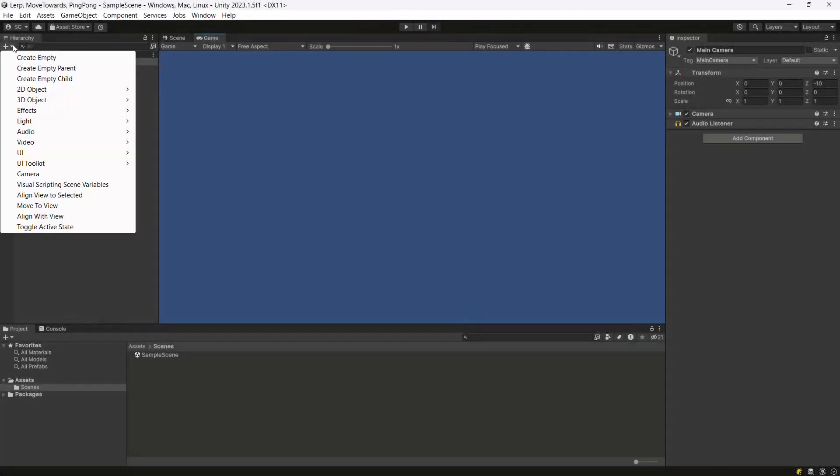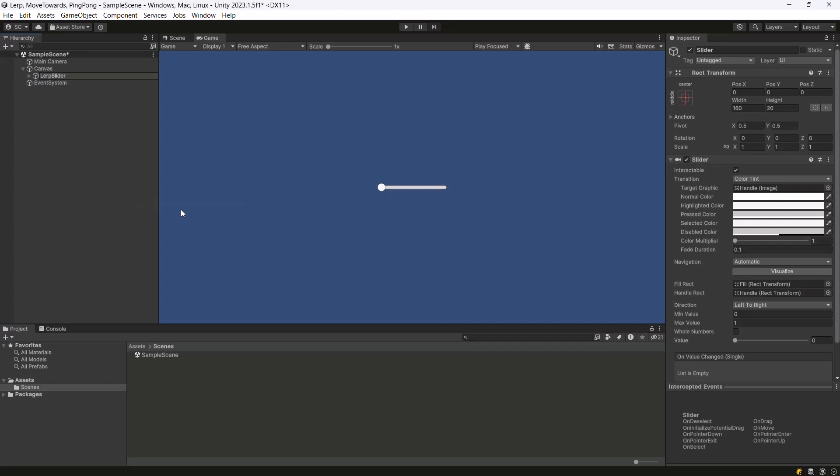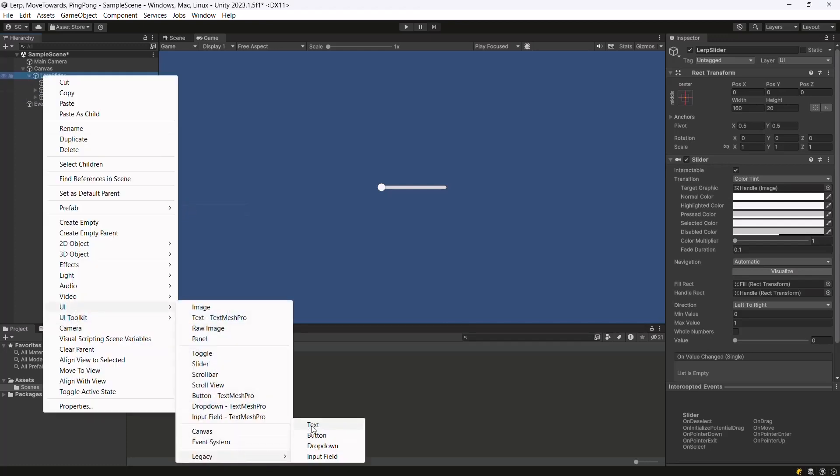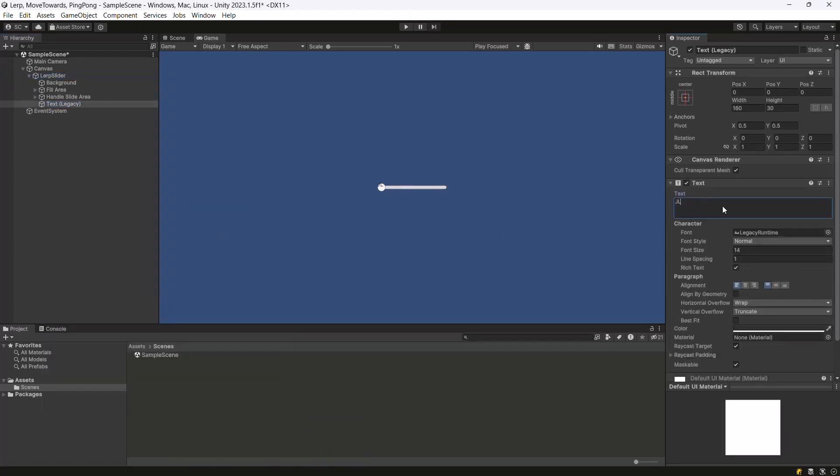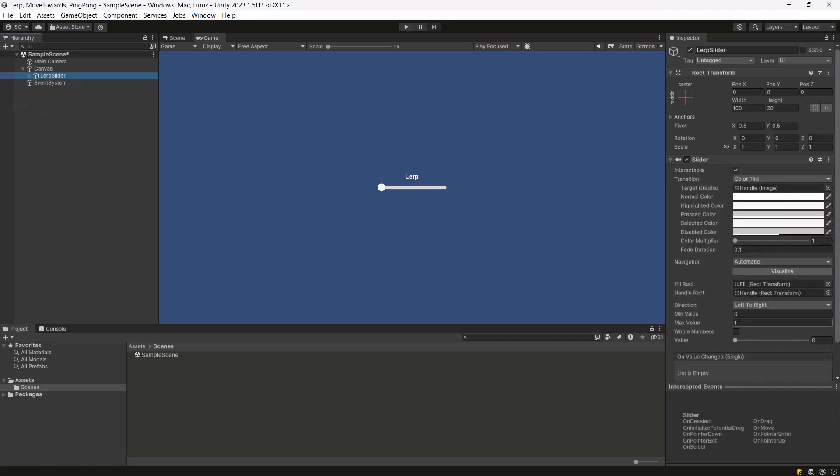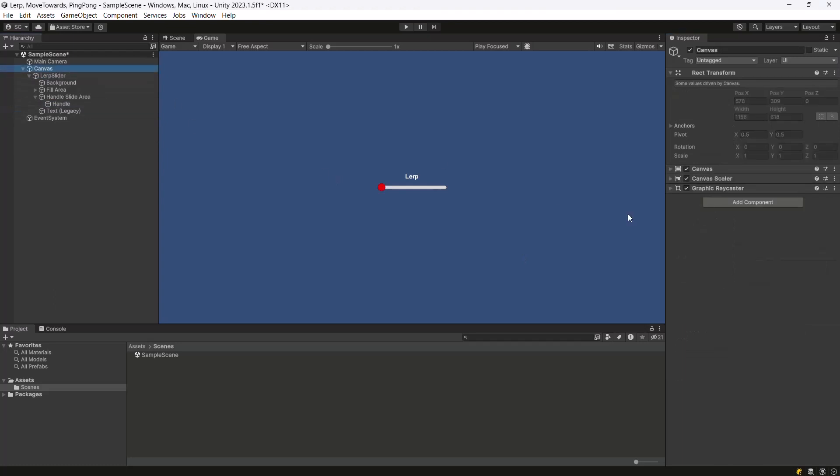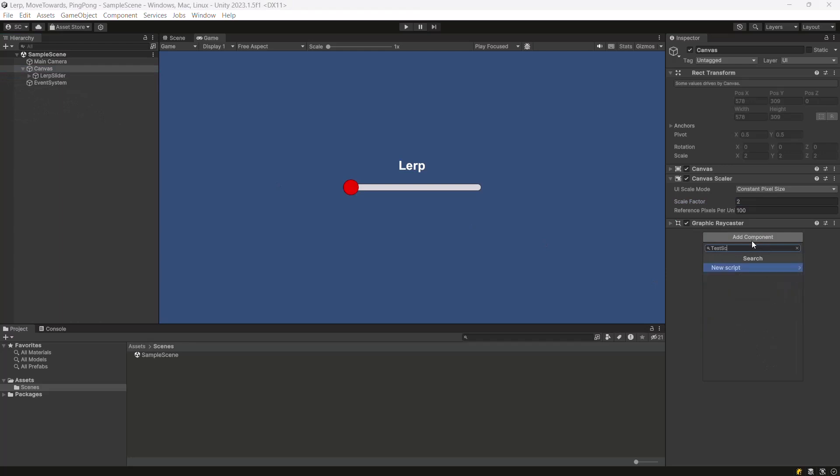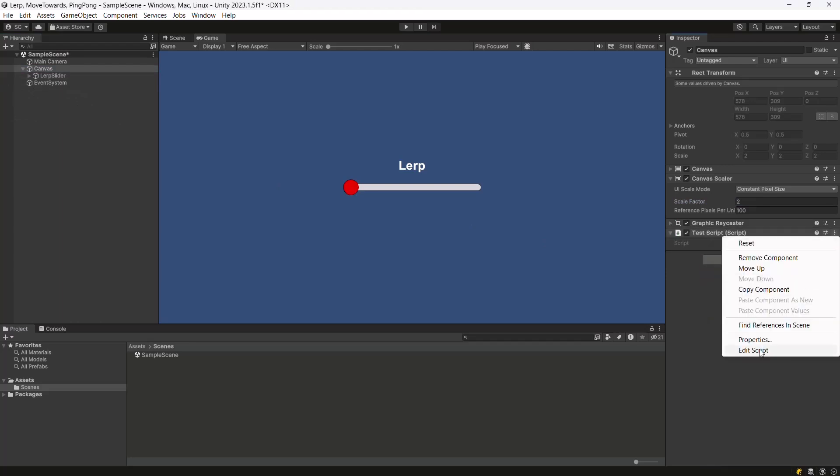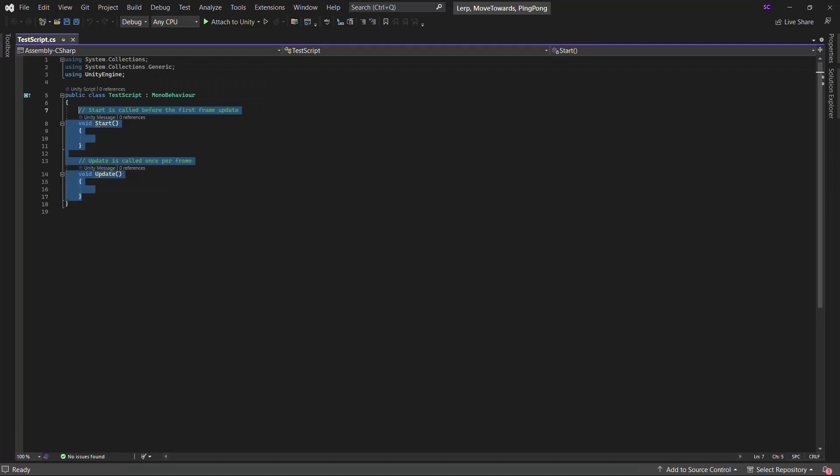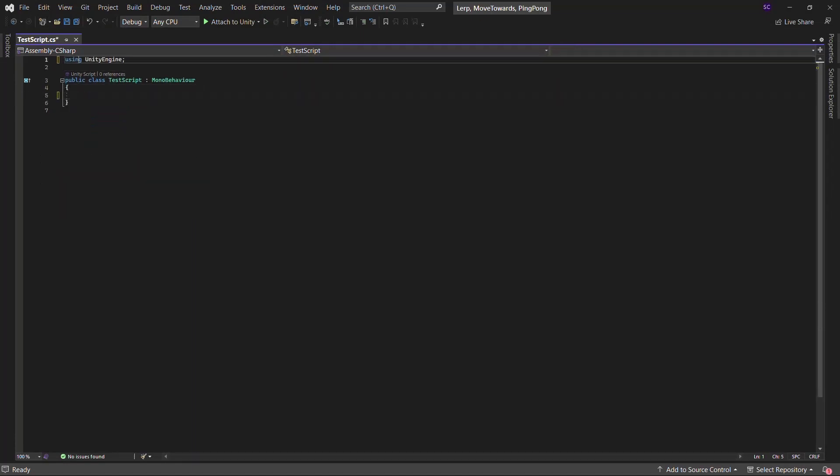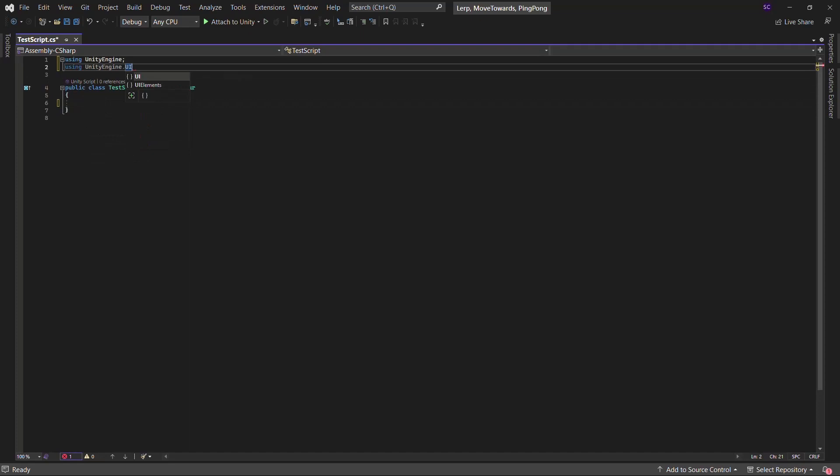Let's start with Lerp. Create a slider to observe the Lerp value. Set the slider range from 0 to 100 float value. Create a new script named test script. Define the Lerp slider for assignment.